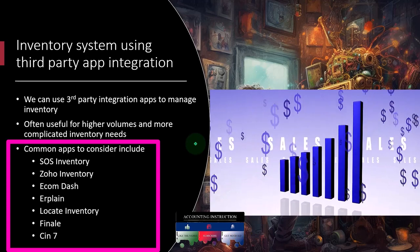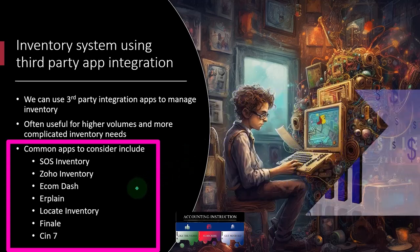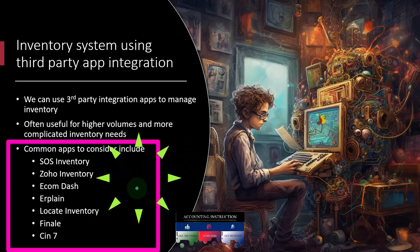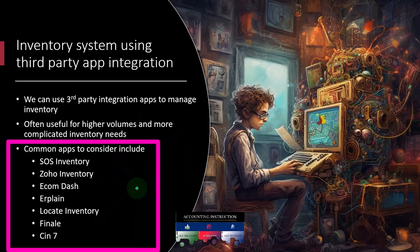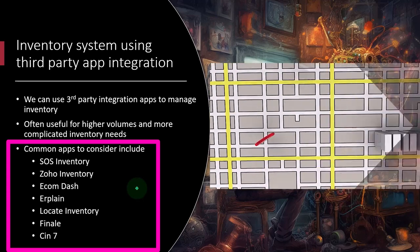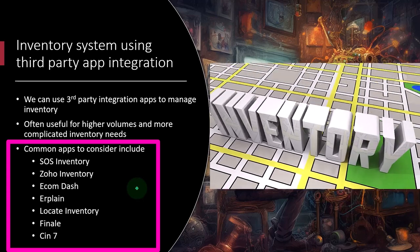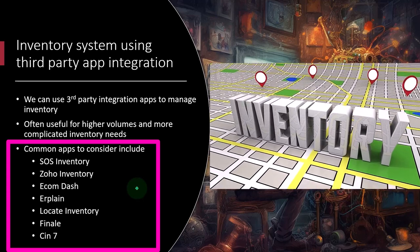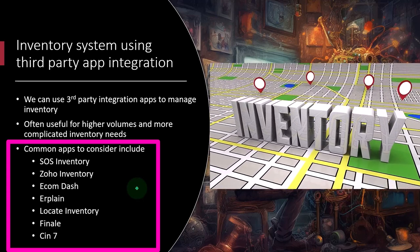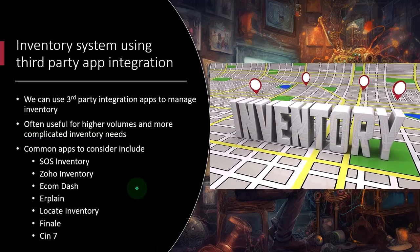Some inventory apps you can look at to get an idea include: SOS Inventory, Zoho Inventory, Ecom Dash, Earplane, Locate Inventory, Final, and SIN7. You can dive into each of those in more detail if you choose.